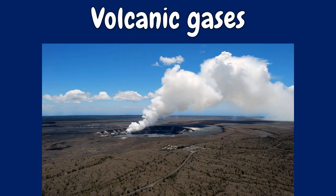By far, the most abundant volcanic gas is water vapor, which is harmless. However, significant amounts of carbon dioxide, sulfur dioxide, hydrogen sulfide, and hydrogen halides can also be emitted from volcanoes. Depending on their concentrations, these gases are all potentially hazardous to people, animals, agriculture, and property.